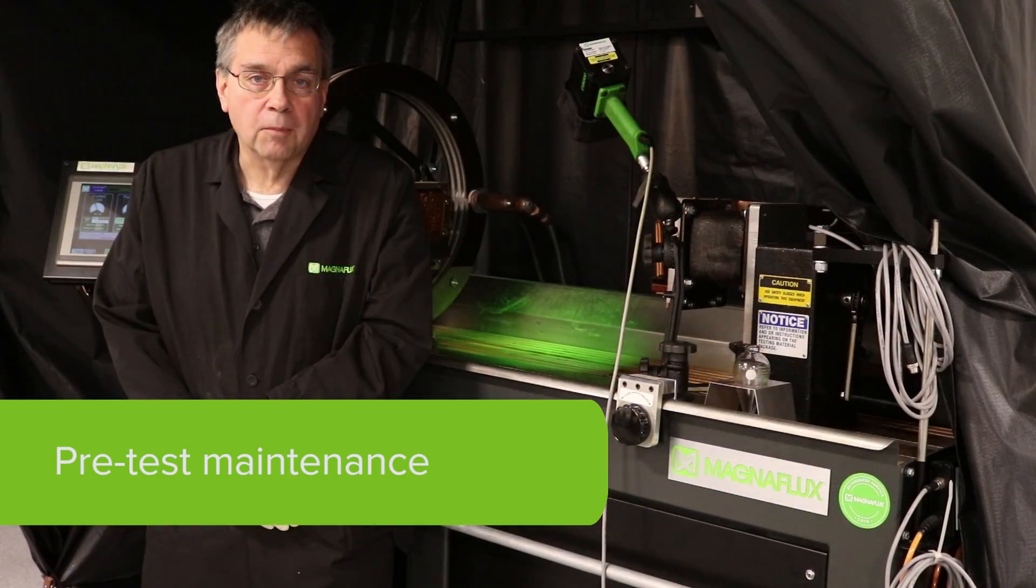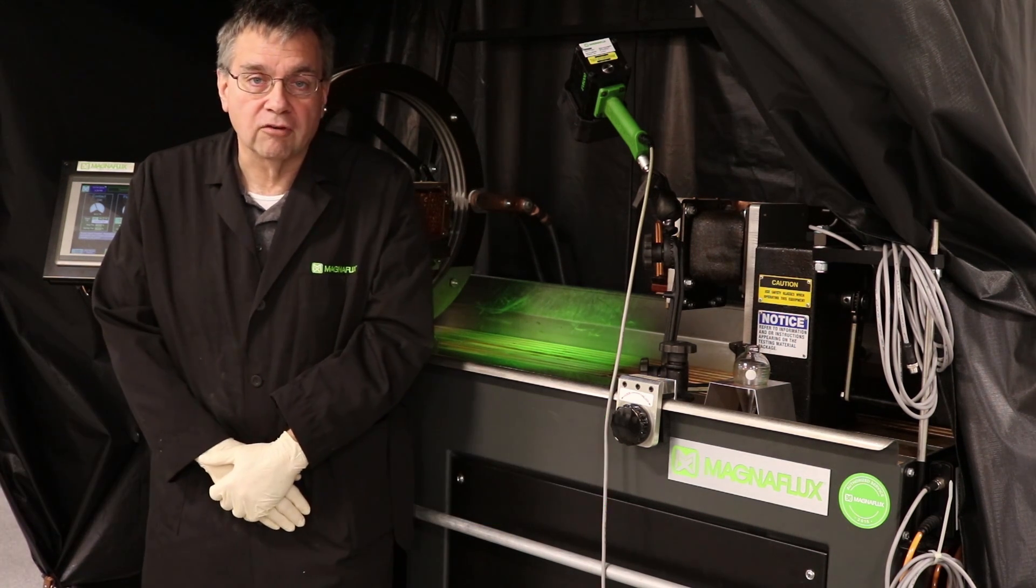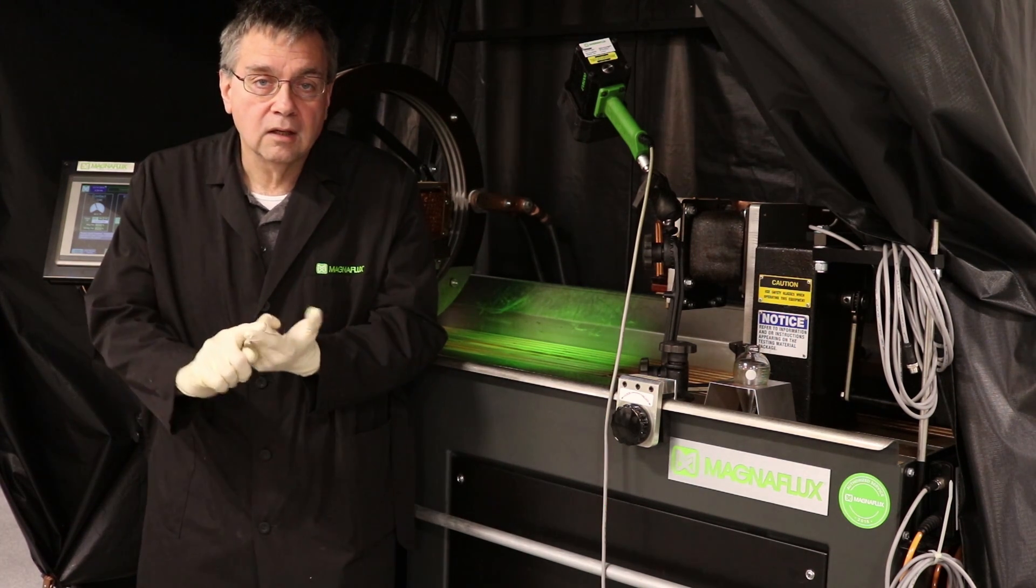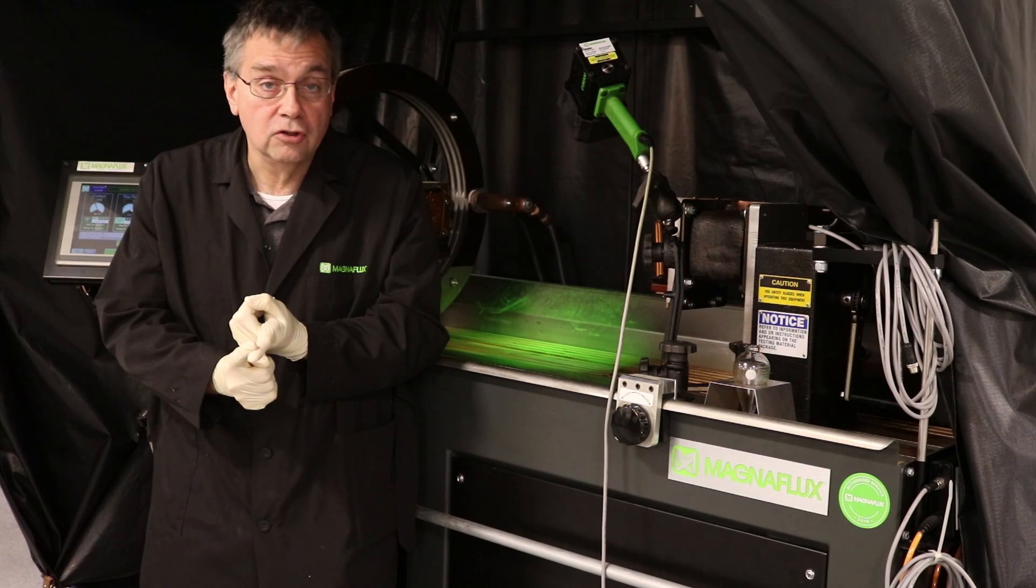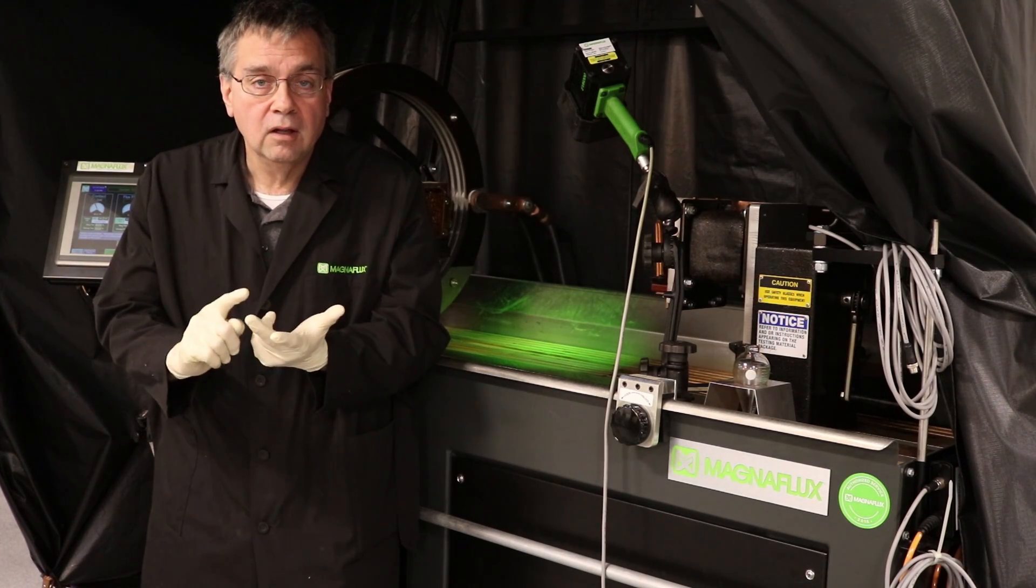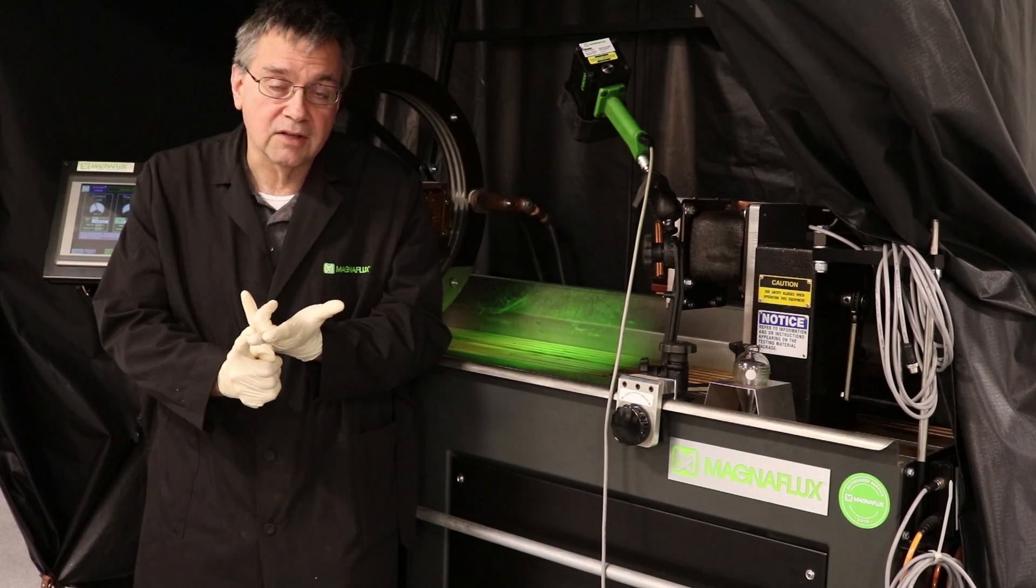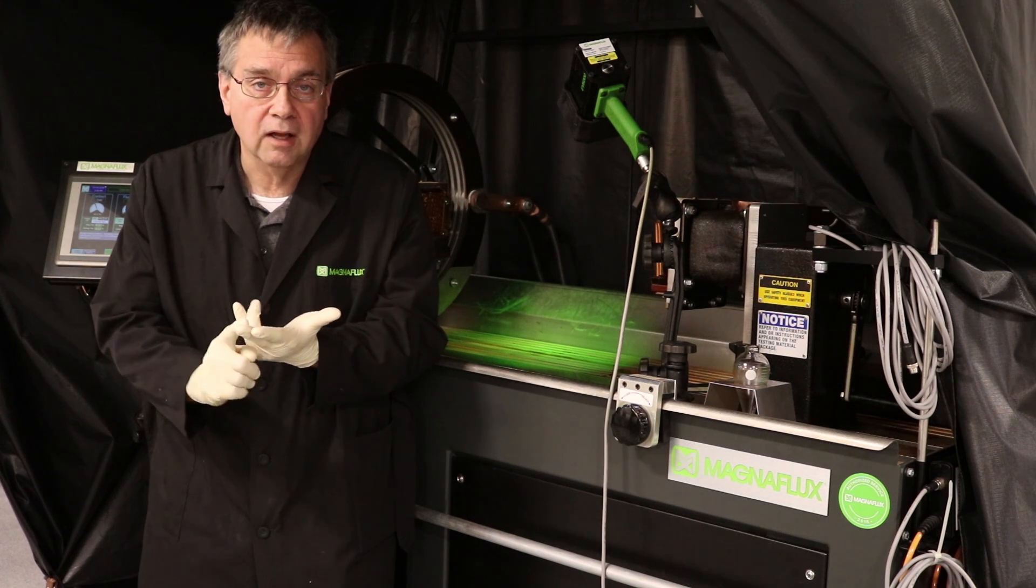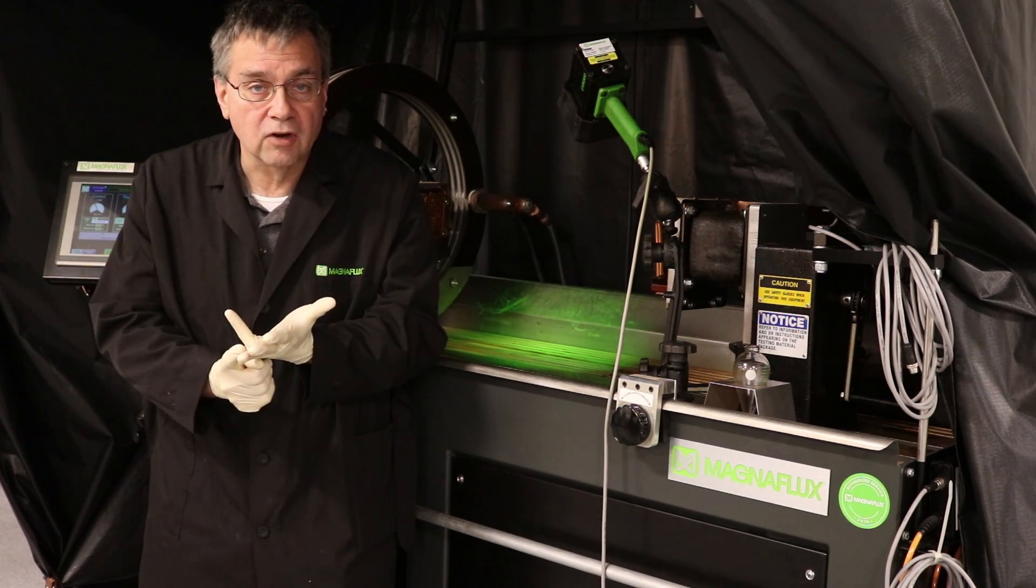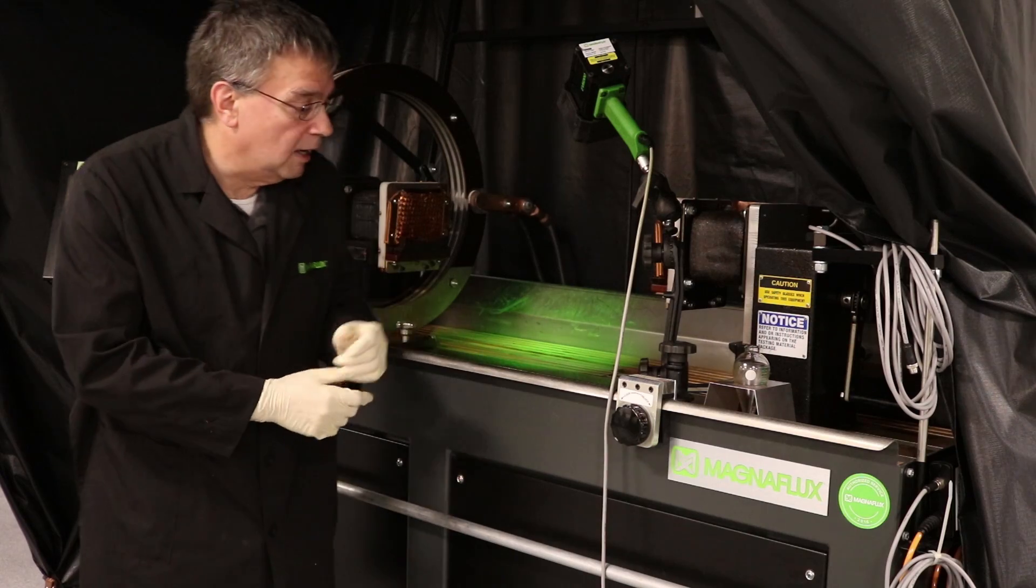Prior to testing the part, you must check a couple of things to make sure your machine is actually ready. One is the ultraviolet light concentration using a UV meter, the visible light so you have less than two foot candles in your inspection area, and you also must check the bath concentration. I'm going to show you how to check the bath concentration now.